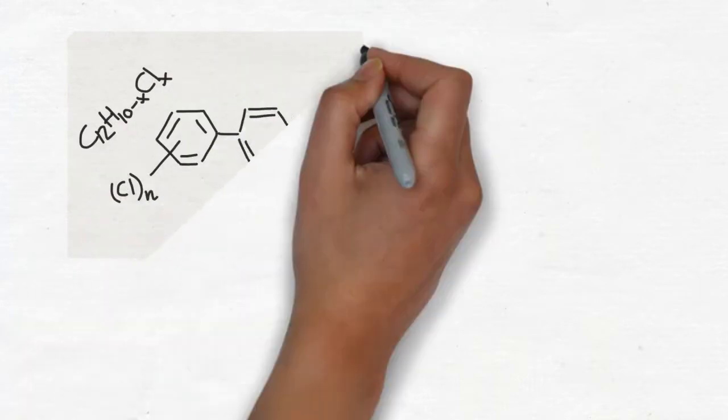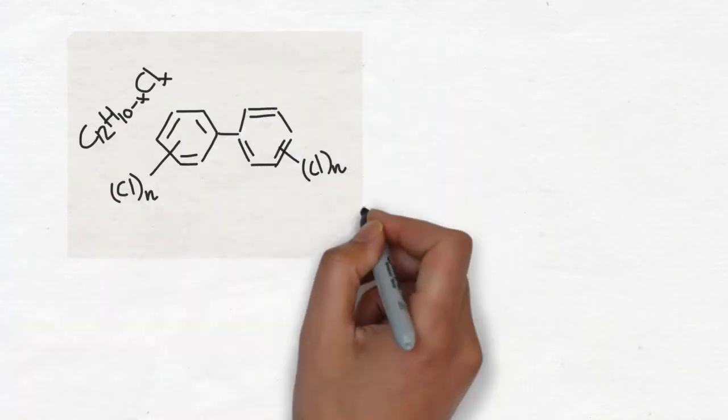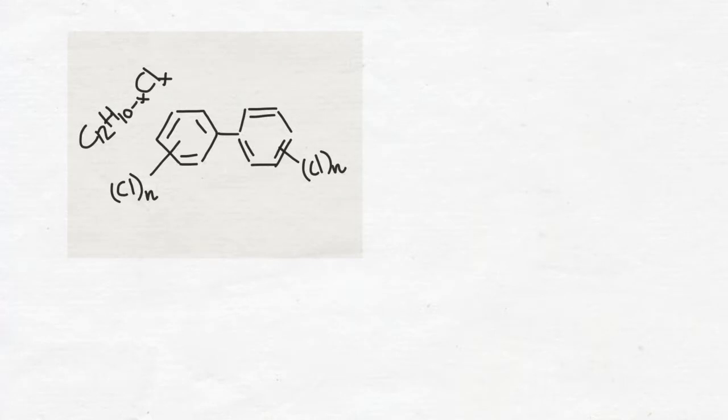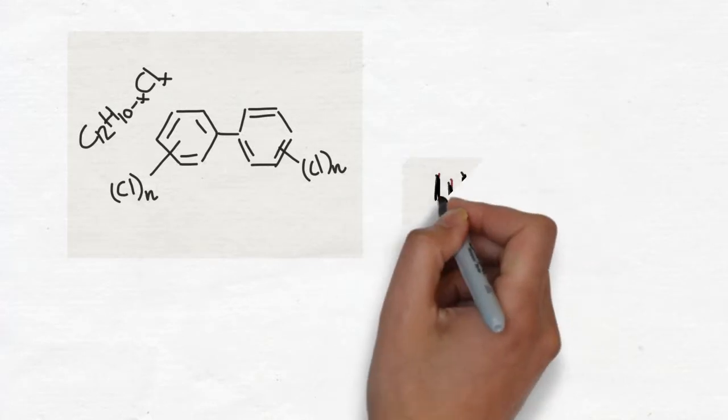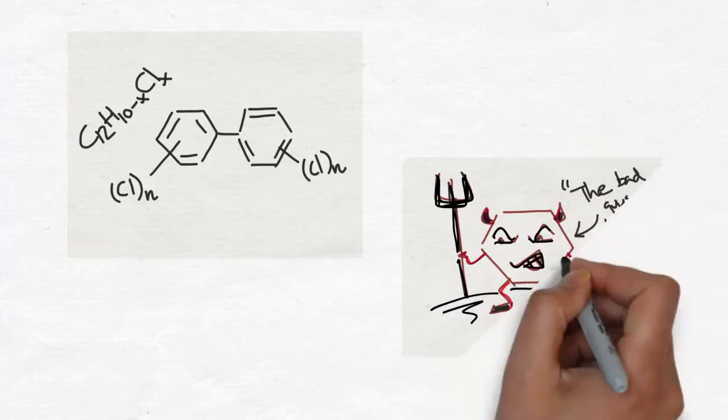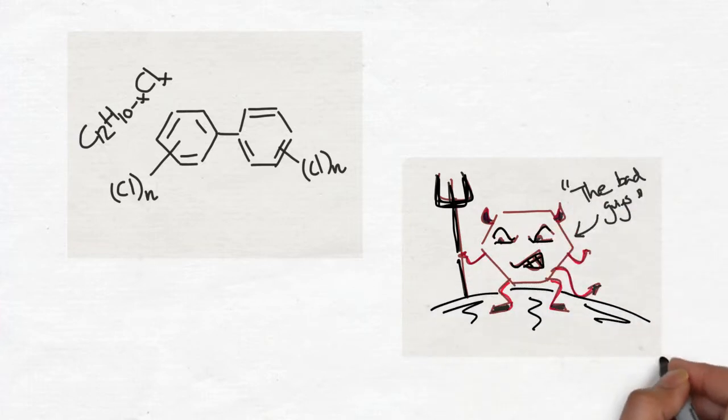PCBs, or polychlorinated biphenyls, are a class of man-made organic chemicals. Each PCB molecule contains two phenyl rings, a ring of six carbon atoms that make up these harmful chemicals.